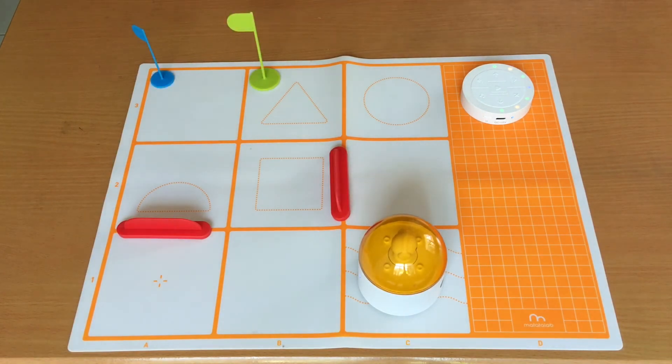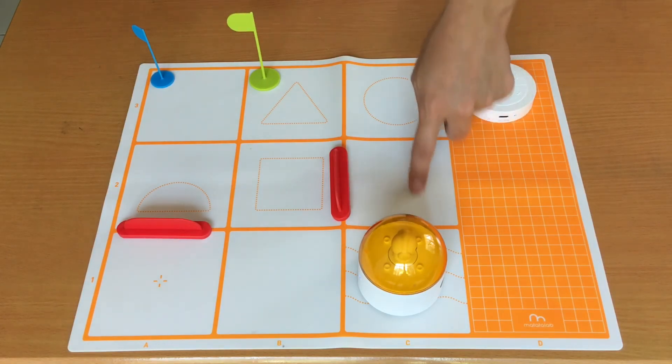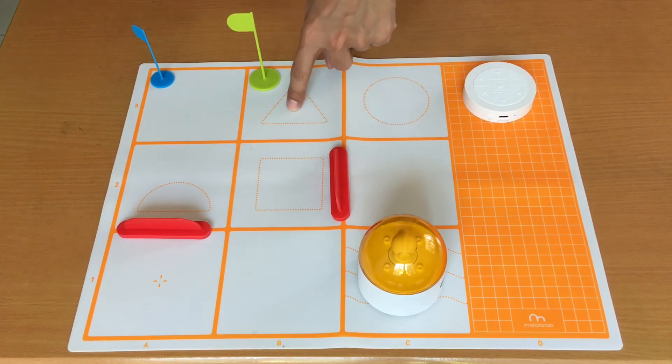So now let's try another challenge. What we want to do is have Matatabot travel here. And when it reaches this triangle, it should play a music and then finish as gold here.